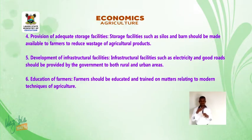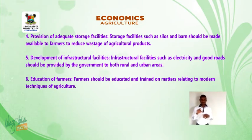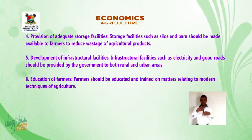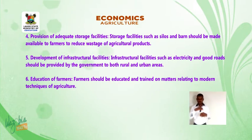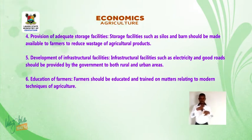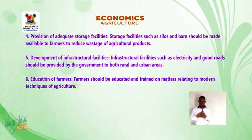6. Development of infrastructural facilities: Infrastructural facilities such as electricity and good roads should be provided by the government in both rural and urban areas. 7. Education of farmers: Farmers should be educated and trained on matters relating to modern techniques of agriculture.